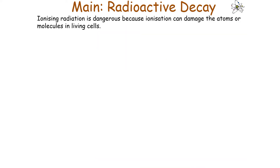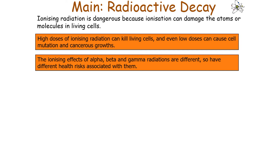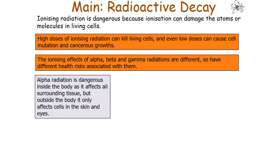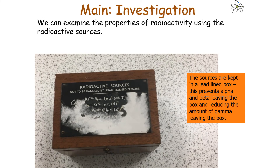Ionising radiation is dangerous because it can damage the atoms of molecules and living cells. High doses can kill living cells, and even low doses can cause cell mutation and cancerous growth. The ionising effects of alpha, beta and gamma radiation differ, so they carry different health risks. Alpha radiation is dangerous inside the body as it affects all surrounding tissues, but outside the body it only affects cells of the skin and eyes. Beta radiation is dangerous both inside and outside the body as it can reach cells throughout the body.